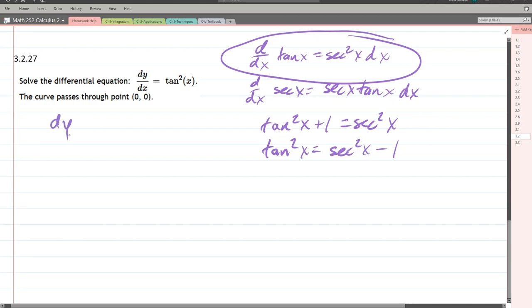So rewrite this with that substitution in place. Alright, so what we need to do is take an antiderivative now to solve for y. What this equation says, if you read it, it says the derivative of y is secant squared minus 1.